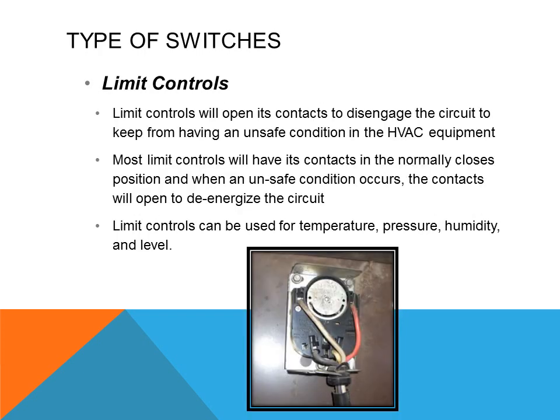Limit controls are any type of control that will limit the use of equipment. For example, if a heating system got too hot, a limit control would disengage it for safety at a certain set point. Limits can be based on pressure, temperature, or even position. If a device moves to a certain location and becomes unsafe, it can trip a limit switch to disengage the equipment. In factories, large pieces of machinery often have limit controls to protect operators from injury or other hazards.